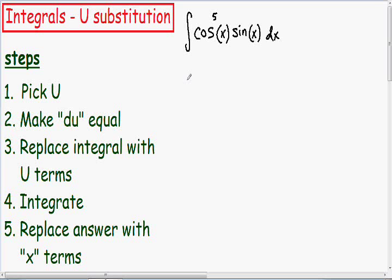So now I want to go over one more u-substitution integral example. And in this example we're going to deal with trig functions. So here we have the integral of the cosine of x to the fifth power multiplied by the sine of x dx.